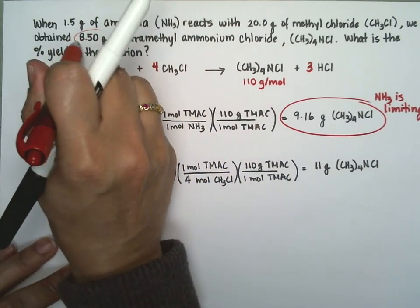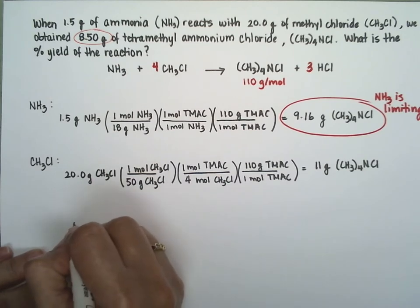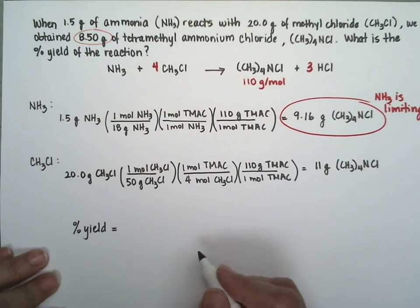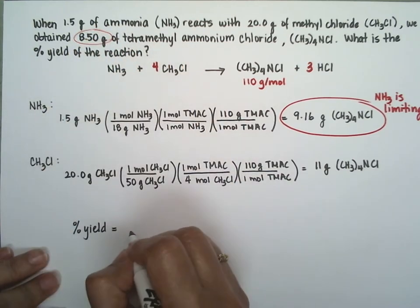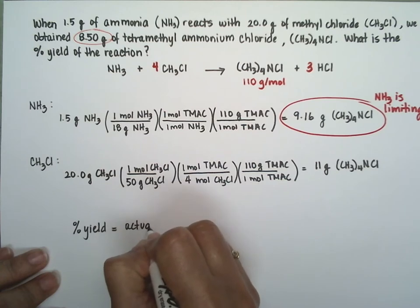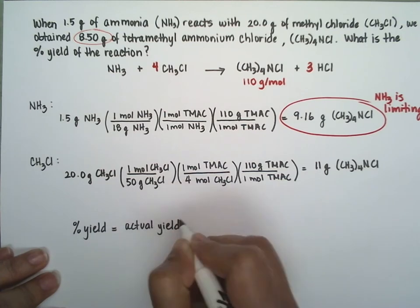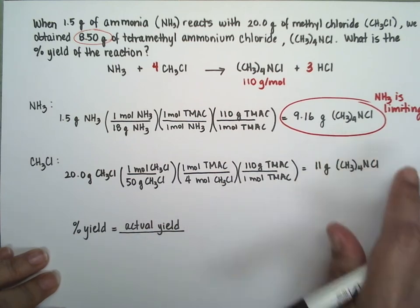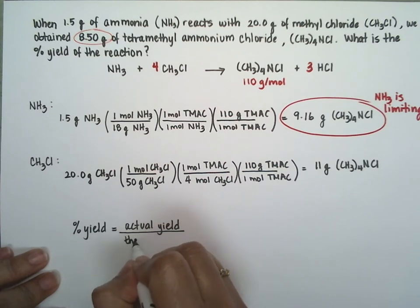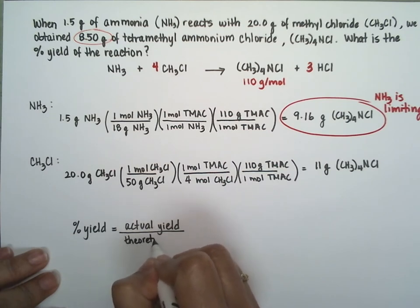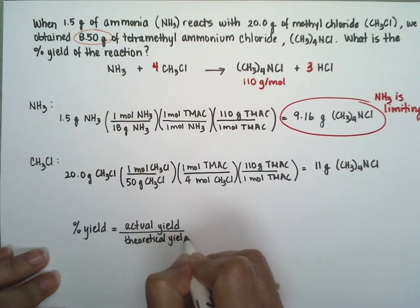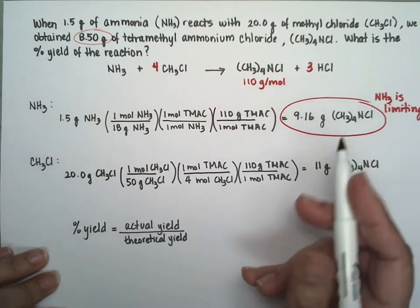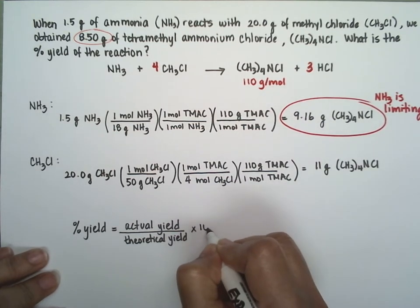But nobody's perfect, so what we actually get is 8.5 grams. The percent yield is the actual yield divided by the theoretical yield, multiplied by 100. The actual yield is what you measure in lab after doing the reaction; the theoretical yield is what you would get if everything went perfectly.